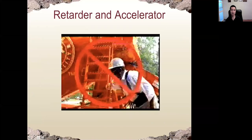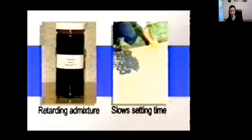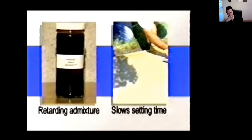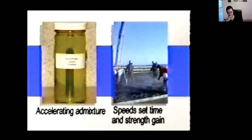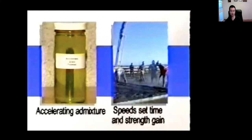The next chemical admixture is set-controlling admixtures. You can either increase setting time — in that case we call it a retarder — or reduce the setting time — we call that an accelerator. To slow setting time and minimize cracking in hot weather, a retarding admixture should be added to the mix. In very cold weather, hydration and strength gain may slow or stop completely. To place concrete in winter conditions, an accelerating admixture may be needed to speed the concrete's set time and strength gain.